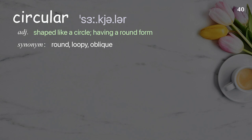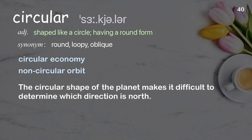Circular: shaped like a circle; having a round form. Examples: circular economy, non-circular orbit. The circular shape of the planet makes it difficult to determine which direction is north.